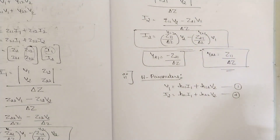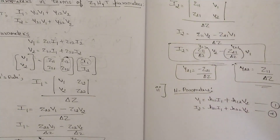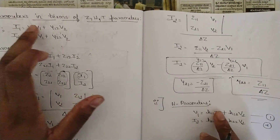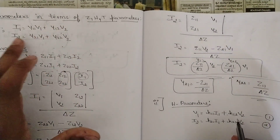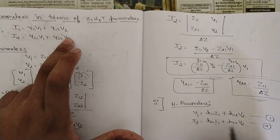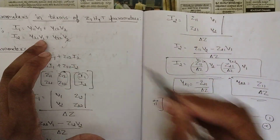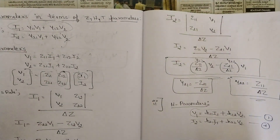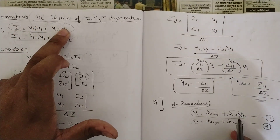The first step is checking for common variables between the two sets of equations. Compare equation 1 of H parameters with the first Y parameter equation: both have I1, V1, and V2 — so these two are having the same variables. Compare the second equations: I2, V1, V2 versus I2 and V2 but with I1 in place of V1 — those two pairs are not compatible. The first equation pair is possible since they share the same set of variables: I1, V1, and V2.